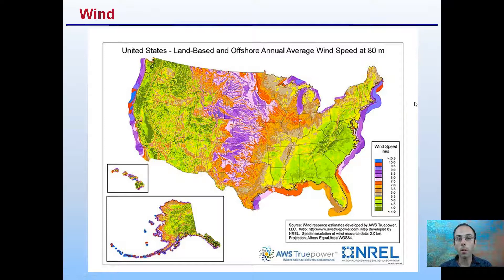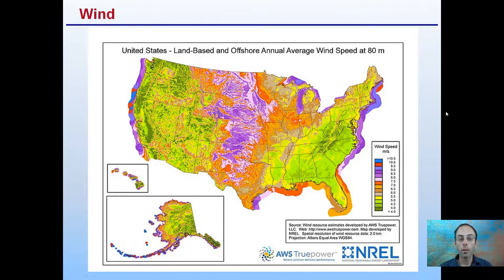Lastly, we have wind. Looking at land, basin, and offshore annual average wind speed at about 80 meters, we can see areas that tend to be windier and areas that tend to be calmer. This can impact an area's climate, and it can also influence whether companies can invest in wind turbines as alternate forms of energy. Typically near the coast it can be windier than more inland regions, and proximity to mountainous regions can also impact the average wind speed in a particular area.